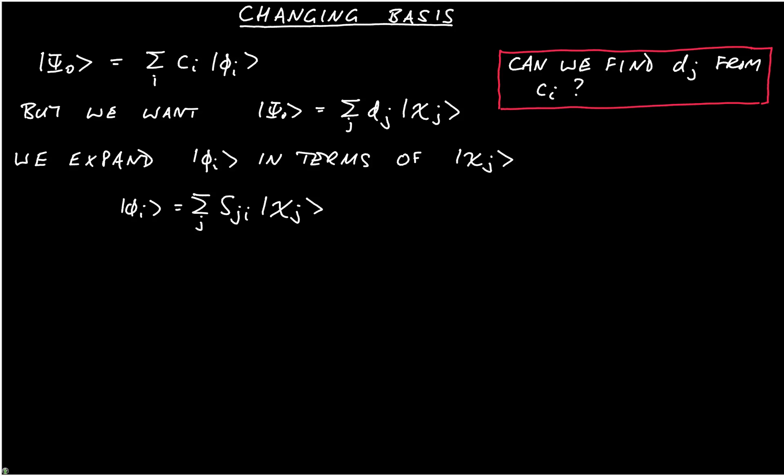We have s_ji because we have to have a set of coefficients for each state i, each state phi_i. We know from before that, in general, the element s_ki is going to equal bra chi_k ket phi_i. That gives us a reason to calculate these coefficients s.